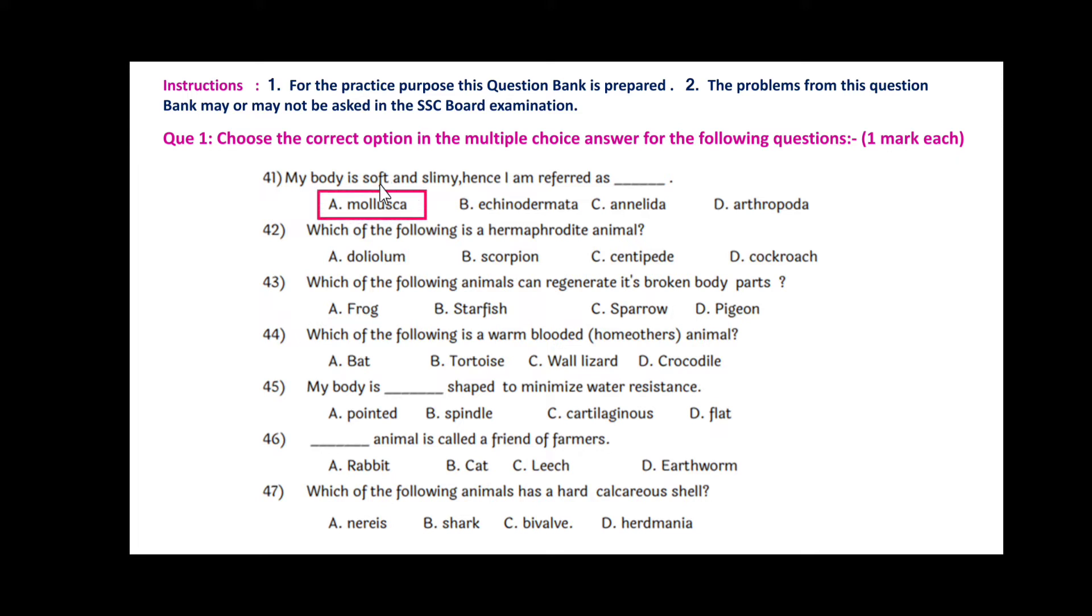Which of the following is a hermaphrodite animal? That will be Doliolum. Question 42: Which of the following animals can regenerate its broken body parts? That is starfish.